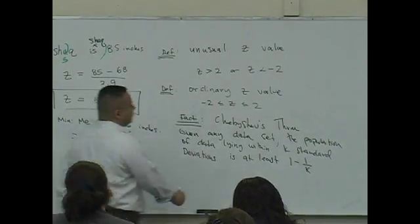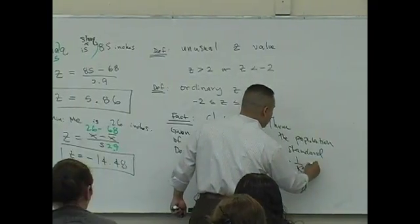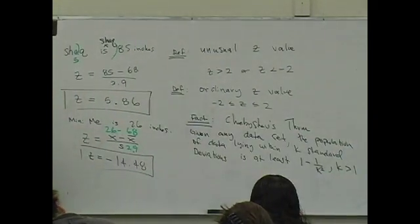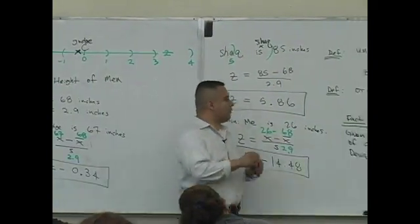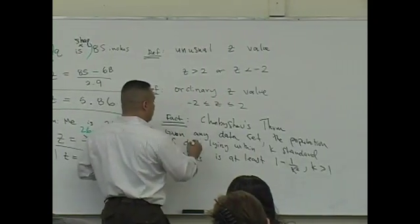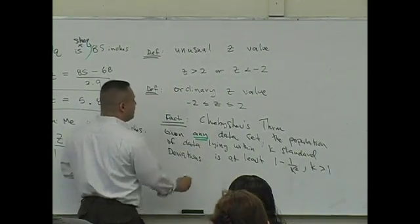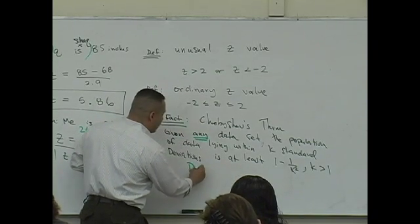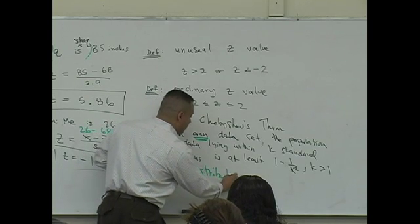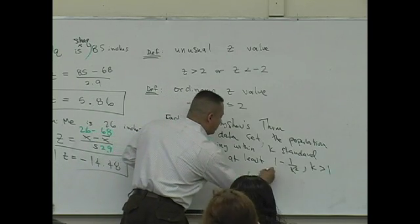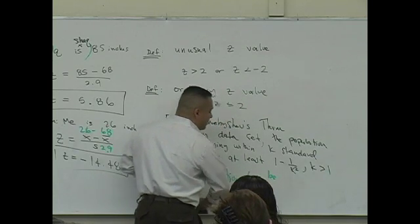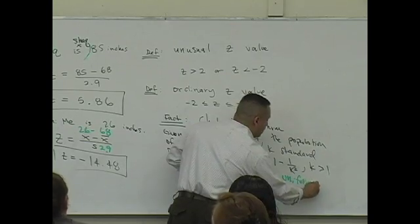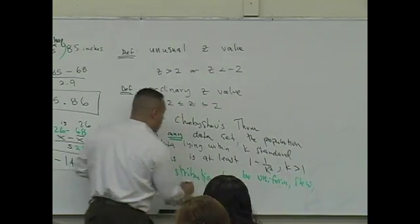This is true for K greater than one, and it's true for any data set. What we mean by any data set is that the distribution can be any type. Remember we talked about those different types of distribution? It can be uniform, skewed, or normal.